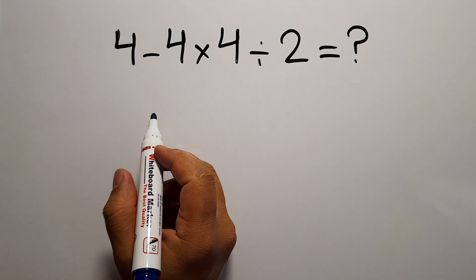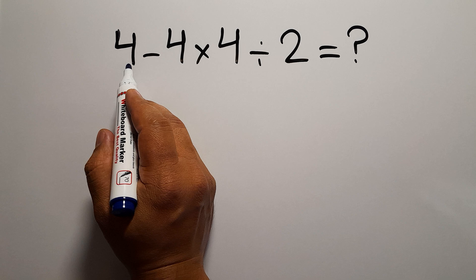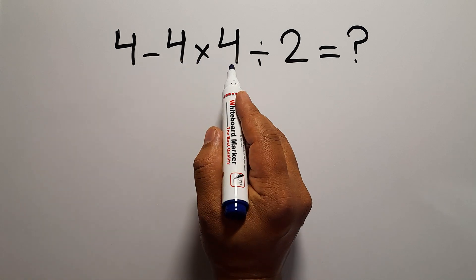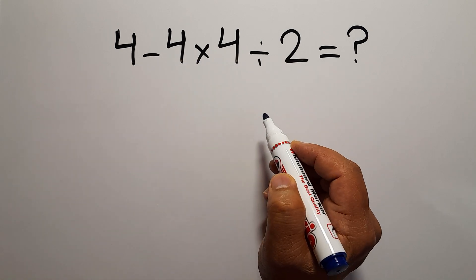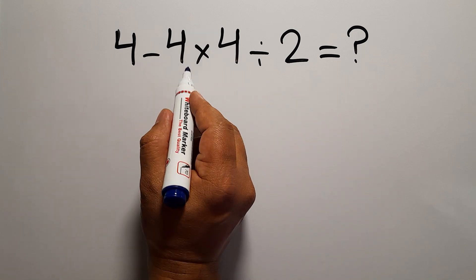Hey guys, welcome to this video. In this video we want to find the value of this expression: 4 - 4 × 4 ÷ 2. Are you ready to solve? Let's get started. 4 - 4 gives us 0.